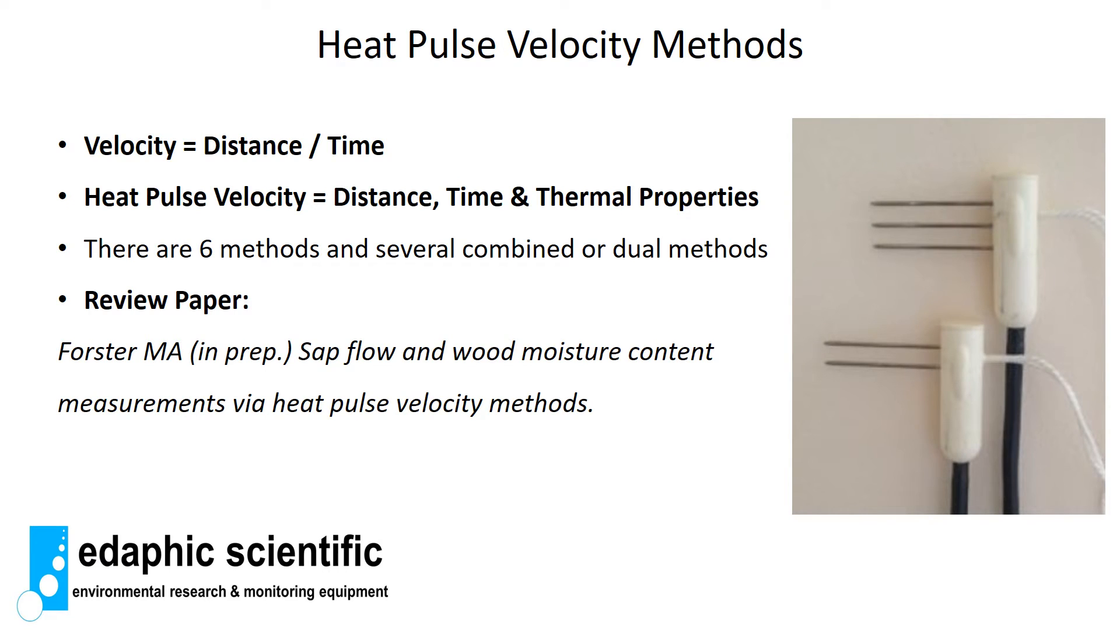When we think about measuring heat pulse in plants, what you should always keep in mind is your high school physics and this simple equation where velocity equals distance divided by time. When we're measuring heat pulse velocity in plants, we're simply measuring distance divided by time and then adding some thermal properties into the mix. There are six current methods to measure heat pulse velocity in plants and a bunch of combined or dual methods.